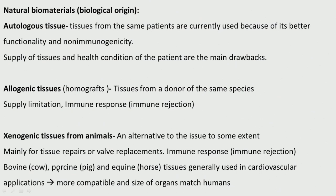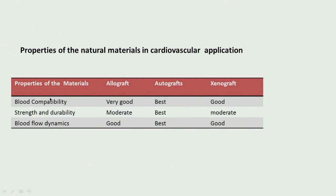Bovine, porcine, and equine tissues are generally used in cardiovascular applications. Blood compatibility of allograft — from the donor — is good. Autografts are best for strength and durability. Blood flow dynamics are reasonably good for moderate options.